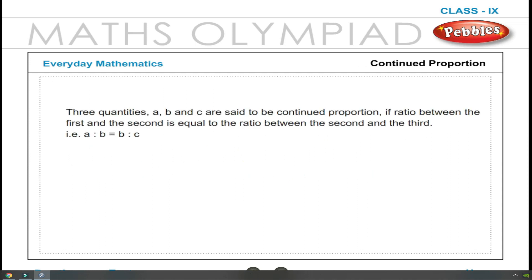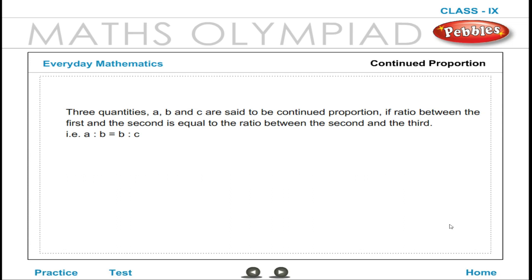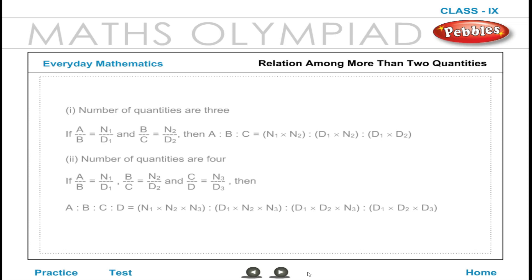Continued Proportion: Three quantities, a, b, and c, are said to be in continued proportion if the ratio between the first and the second is equal to the ratio between the second and the third. That is, a is to b is equal to b is to c. Relations among more than two quantities are expressed as follows.